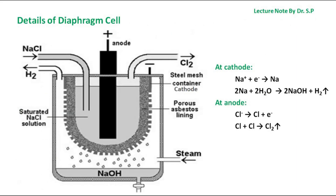The details of the diaphragm cell for the manufacture of sodium hydroxide are shown in the figure. Sodium hydroxide is manufactured by electrolysis of brine. The diaphragm cell is chosen in preference to mercury cathode cells because it is relatively more efficient and poses no health hazard of mercury. Here, brine solution means NaCl solution.